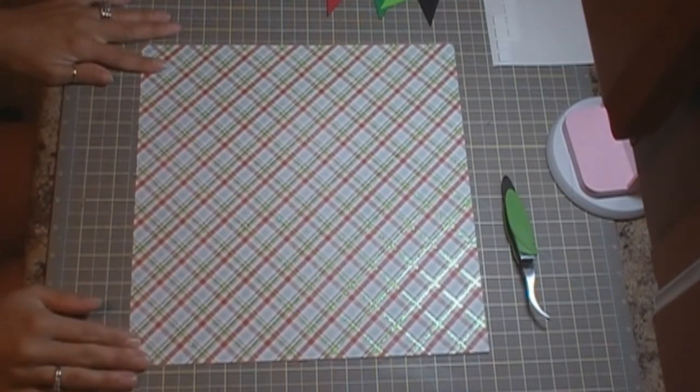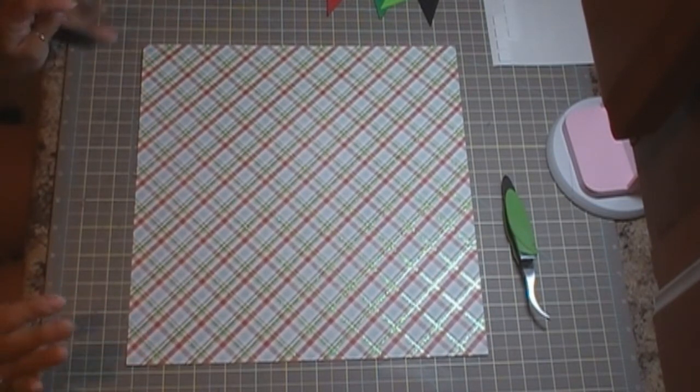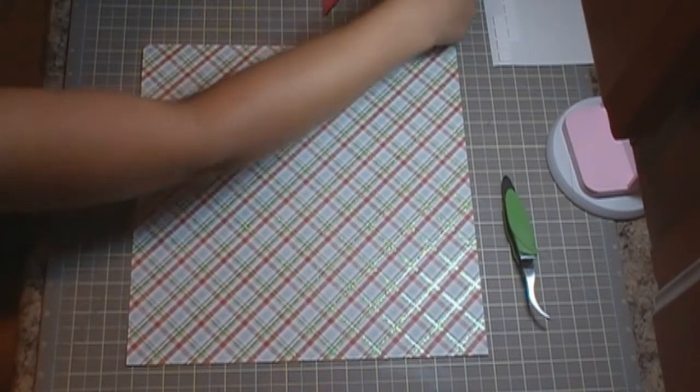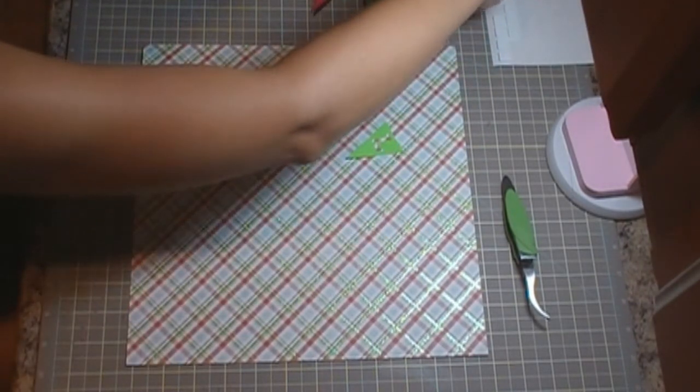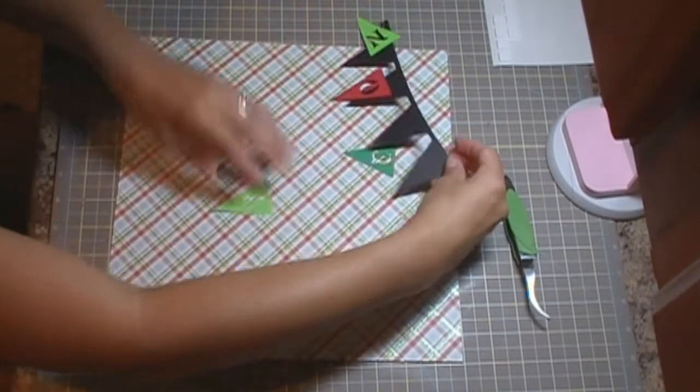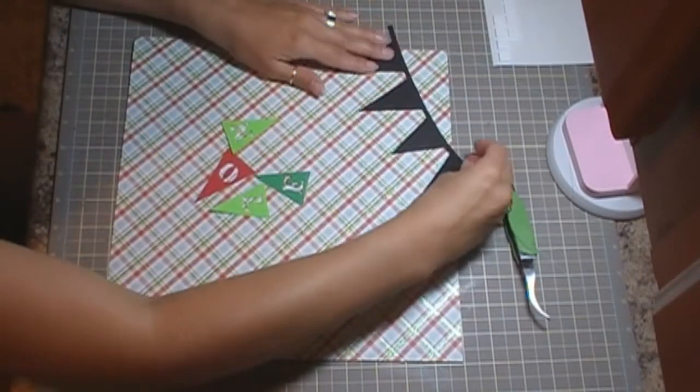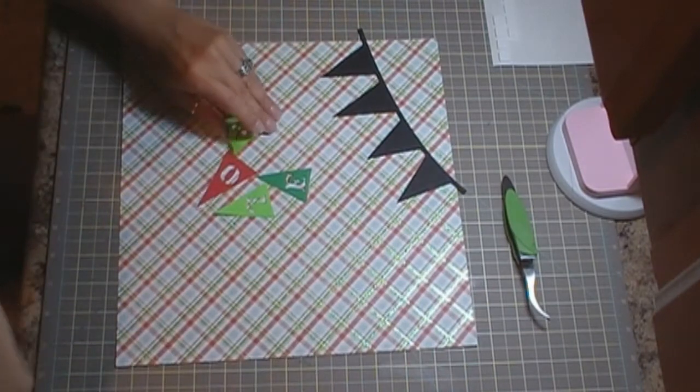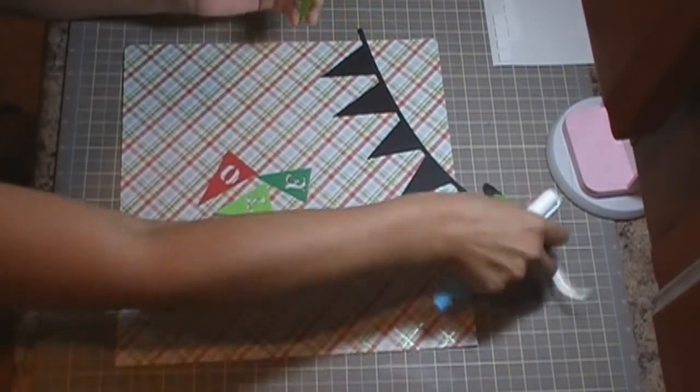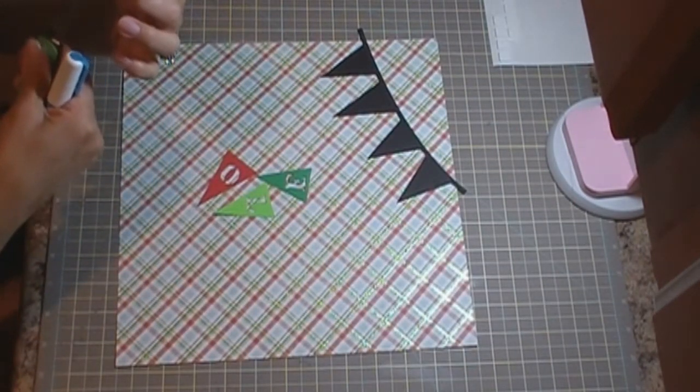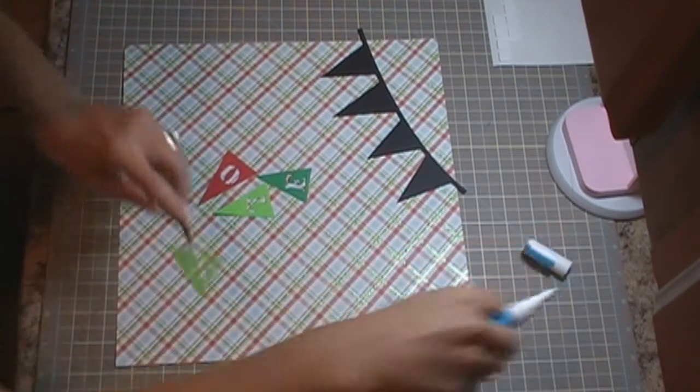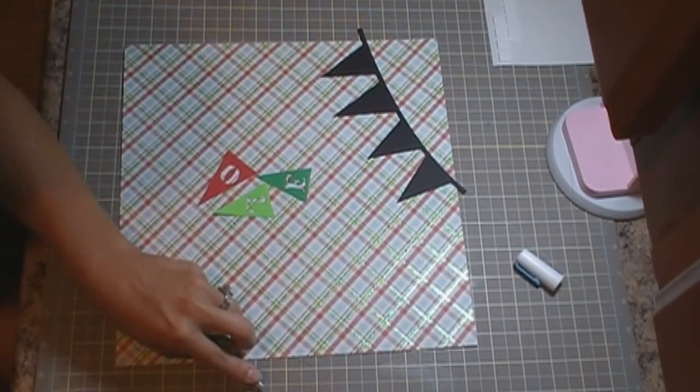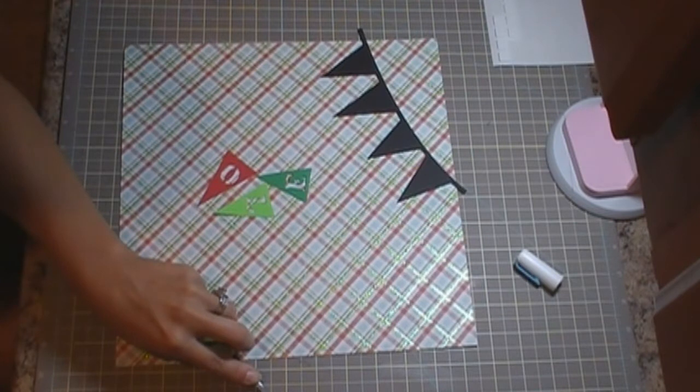I have the 12x12 layout. I use the Jolly Holidays Cricut cartridge and what I'm going to start out with is my banner that says Noel and that's going to go in the upper left hand corner. I'm going to go ahead and adhere the pieces for that and the title or the banner is cut at three and a half inches.